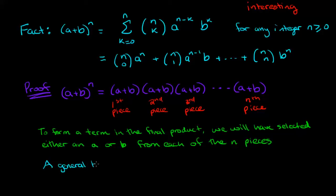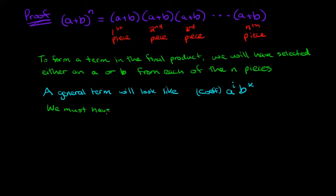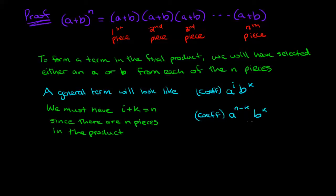This means that a general term will look like some coefficient times a to some power, let's call it i, times b to some power, let's call it k. We must have i plus k equal to n since there are n pieces in the product. This means that we're going to have our coefficient times a to the power n minus k times b to the power of k.